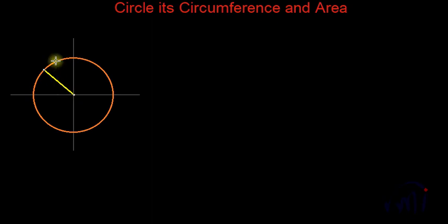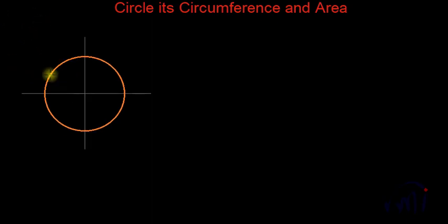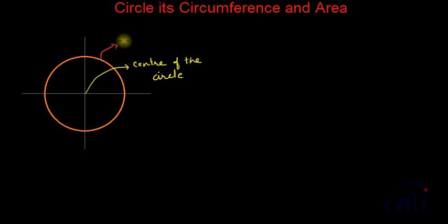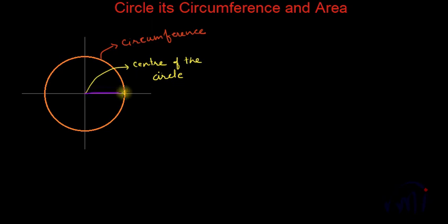And it is always a constant. This point is known as the center of the circle, and this is known as the circumference of the circle. Circumference is nothing but the perimeter of the circle. And we have also discussed that this distance — the distance from the center to the perimeter of the circle — is known as the radius of the circle.